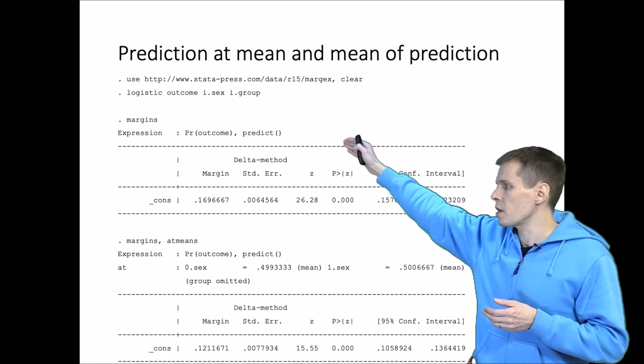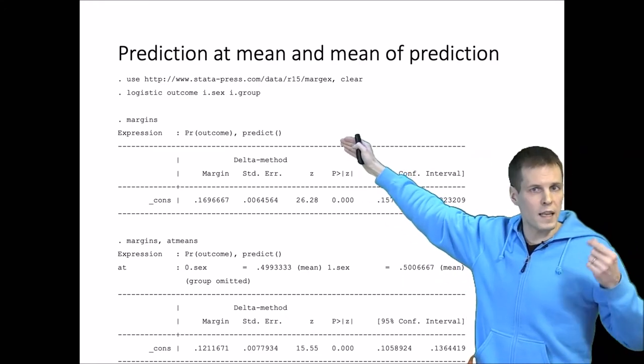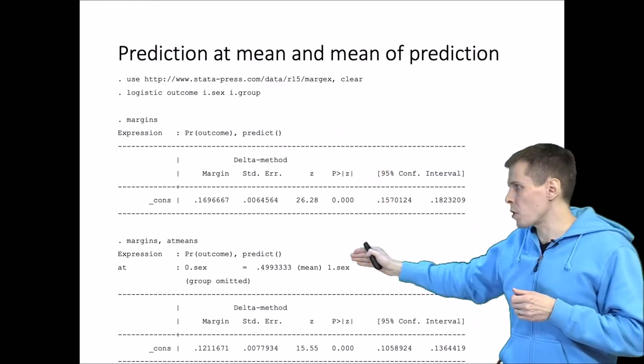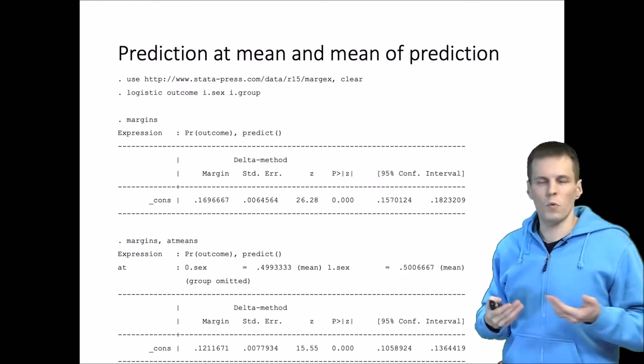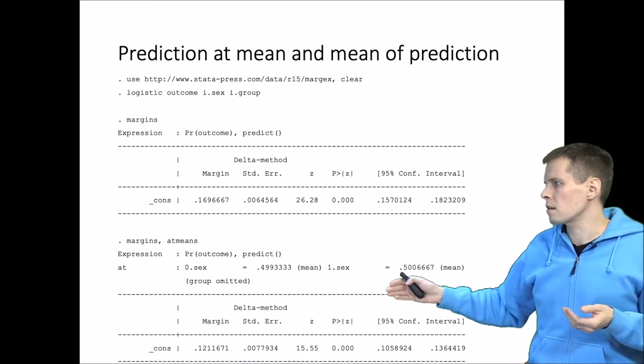We have this logistic regression model here and we are doing two sets of predictions. We are doing the default predictions that margins does, which is the adjusted predictions, and then we are doing predictions at means.